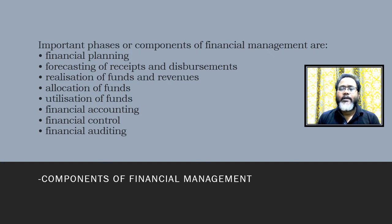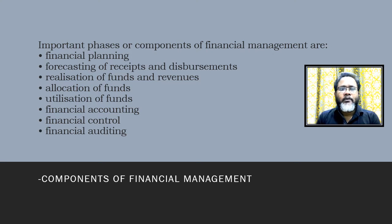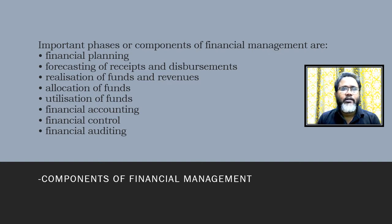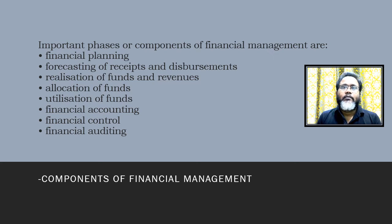Once funds are received, you allocate them to each segment — for example, for journals, books, employees, and human resources. Financial accounting involves keeping a balance between allocation and utilization. Financial control is also essential; without it, public money can be misused.